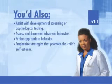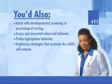Family education is absolutely essential. Teach parenting skills, techniques for behavior modification such as reinforcing positive behavior, and the appropriate use of medications, their correct dosages, and their side effects — which include insomnia, increased blood pressure, nervousness, and anorexia. These effects develop early in treatment and usually subside over time. While there can be negative effects on growth rate, the child's eventual adult height does not seem to be affected. You should also assist with developmental screening or psychological testing, assess and document observed behavior, praise appropriate behavior, and emphasize strategies that promote the child's self-esteem.